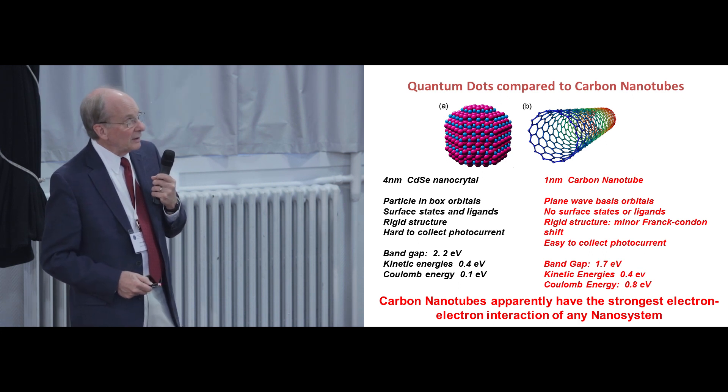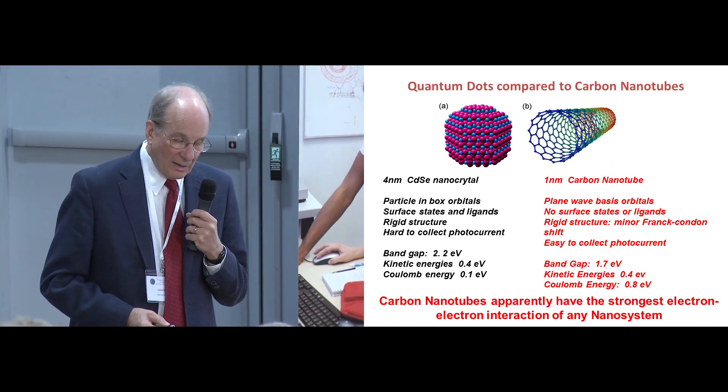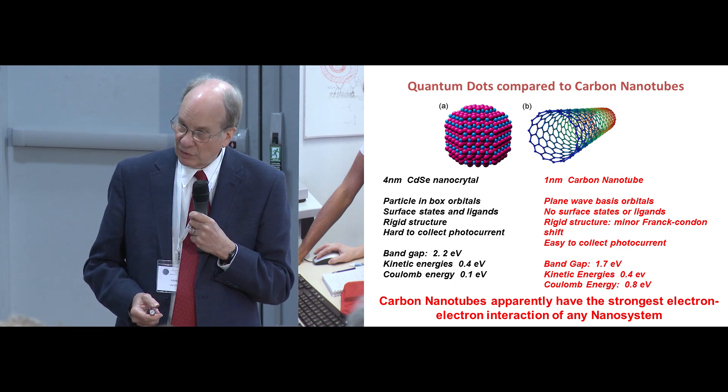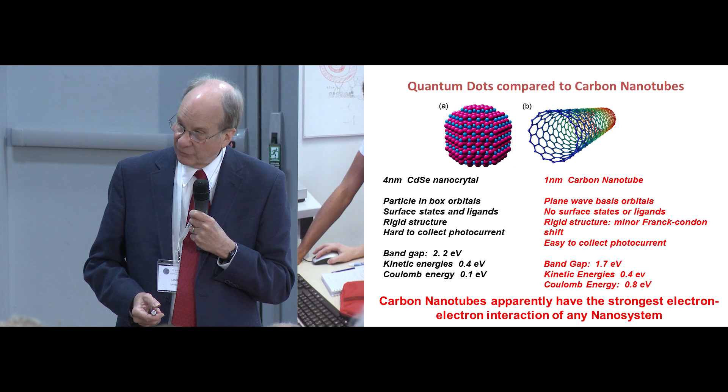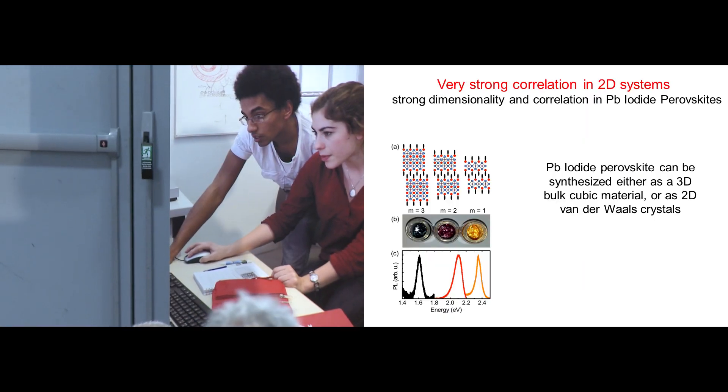So carbon nanotubes have apparently the strongest electron-electron interaction of any nanosystem that we know about. This has been challenged. This point of view has been challenged in the last two years by some of these two-dimensional systems. And let me finish by talking about them.